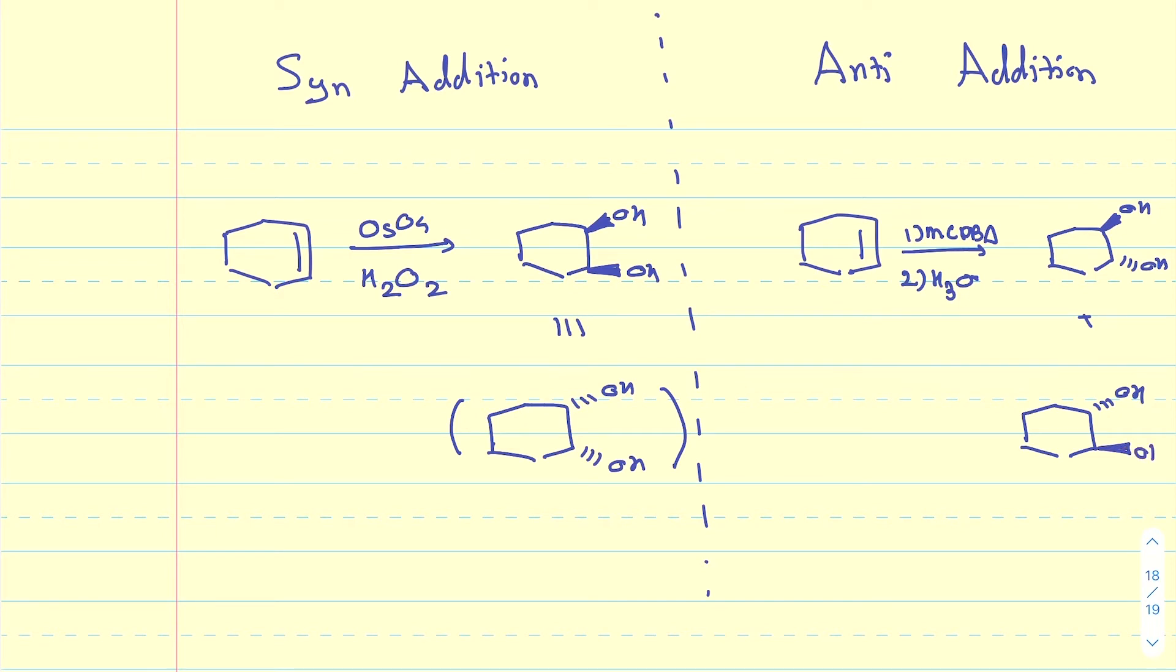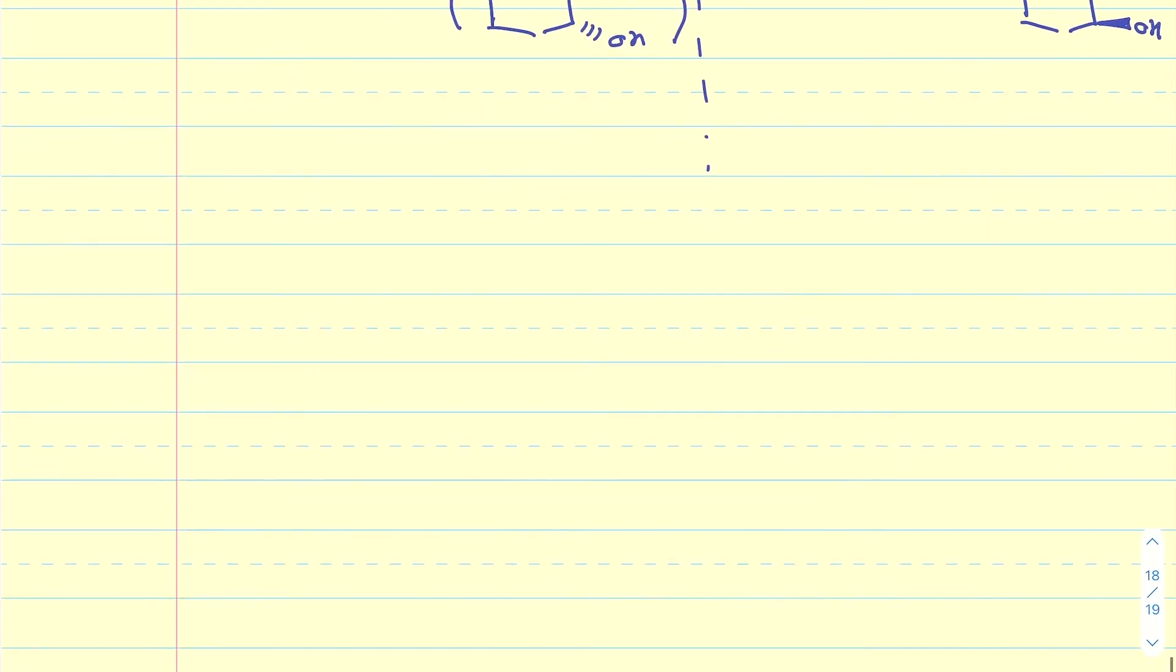They're in anti-addition with one another, and I'm going to get both of them in equal amounts. When the OHs, or the two things that are being added, are added on opposite sides, I call that anti-addition. If they're added to the same side of the molecule, I call that syn-addition.